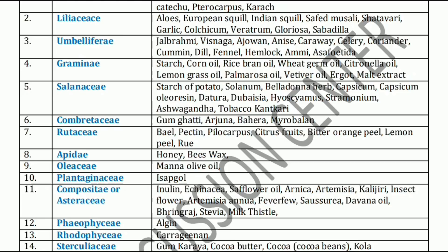The next family is Umbelliferae (Apiaceae) family. It mainly includes Kellambi, Visnaga, Ajwain, Anise, Caraway, Celery, Coriander, Cumin, Dill, Fennel, Hemlock, Ammi, and Asafoetida.